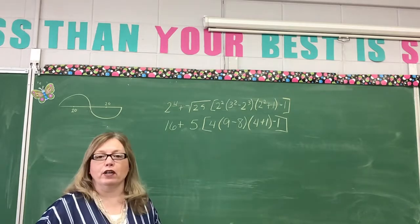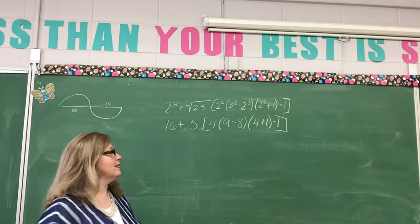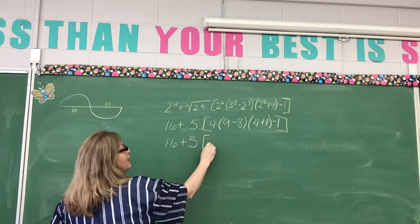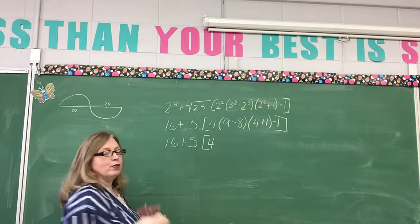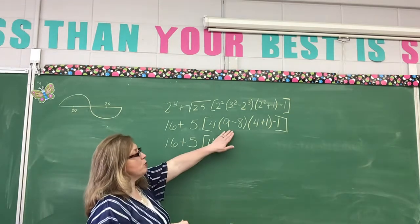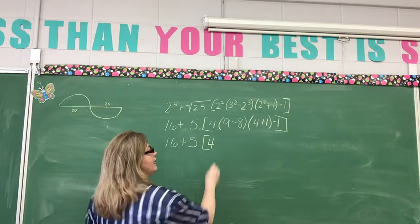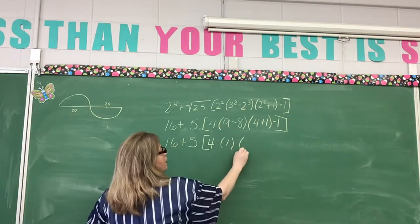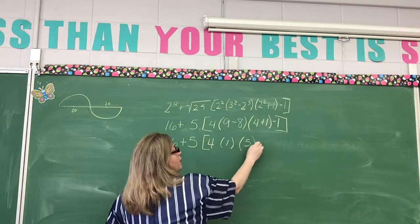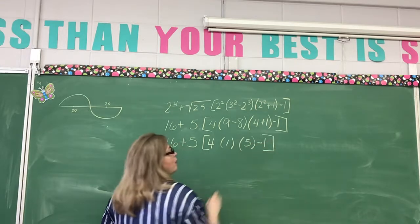Now what do we do? Now we do the parentheses. Okay. So we're not going to do anything to the numbers outside. Put our bracket. Four, I can't do anything with it because it's not inside my innermost parentheses. My innermost parentheses say nine minus eight is one. Then we have four plus one is five minus one, and then our bracket.